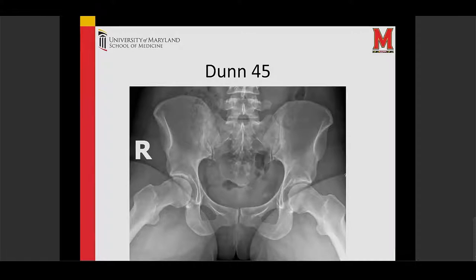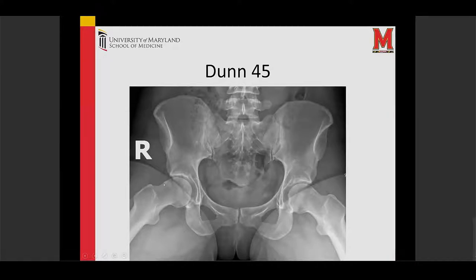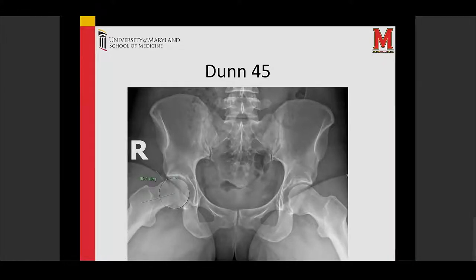A DUN-45 view rotates the hips slightly, and this view is good for young people because it brings out what we call the CAM lesion. Instead of the ball being rounded and curving in on the undersurface, on the top it just goes straight down. This is abnormal bone — extra bone on the femur side — and this leads to impingement. The DUN-45 is a good x-ray to get to look for the CAM lesion, and I get this in everyone.